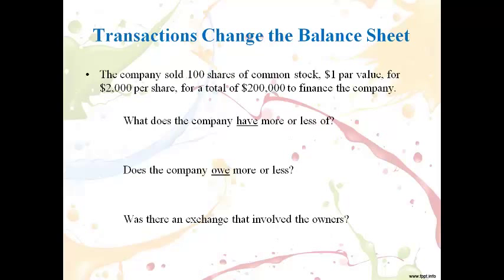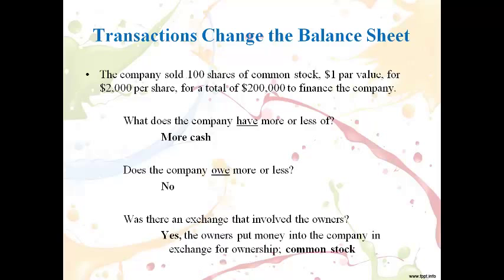Let's go through a few transactions and determine how each transaction will change the balance sheet using the three questions. The company sold 100 shares of common stock for a total of $200,000 to finance the company. The answer to the first question is more cash, because cash will increase. There was no change to what is owed. The owner receives stock in the company, so cash will increase and common stock will increase on the balance sheet.